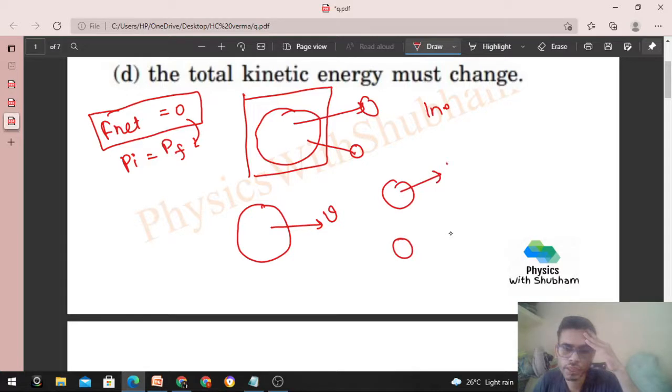Let's say the two parts are moving with v1 and v2. This is m1, this is m2, and what was the initial mass of the block? That was m1 plus m2.